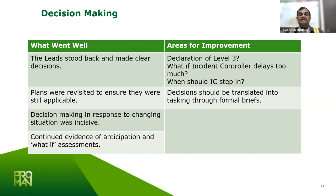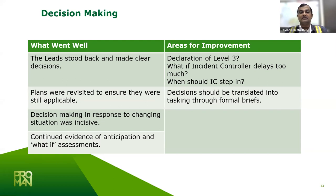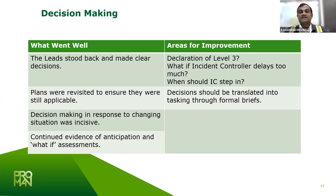Areas for improvement in decision-making: the declaration of a level-three emergency — in your institutions, you will have different levels of emergencies and methods of notification, whether sirens, beeping sounds, or public address announcements. Consider what happens if the incident controller delays too much — when should the incident commander step in? Decisions should be translated into tasking through formal briefs, using that opportunity to task persons in the room to obtain information or gain situational awareness on certain things.